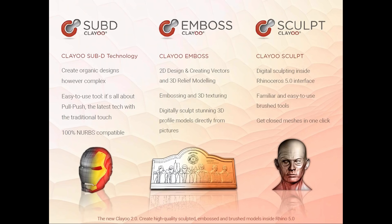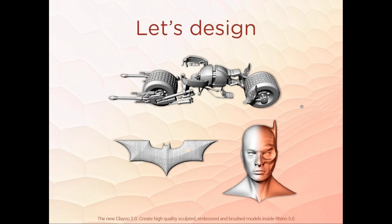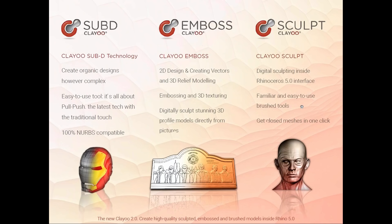To put you on the same page: SubD — we all know SubD technology. It's the possibility to create organic designs, however complex. In the simplest terms, SubD is basically pull and push. You select faces, edges, or points and move them accordingly until you create the desired model. Being a Rhino plugin, you can later convert any ClayU object to NURBS and keep using the standard Rhino tools.